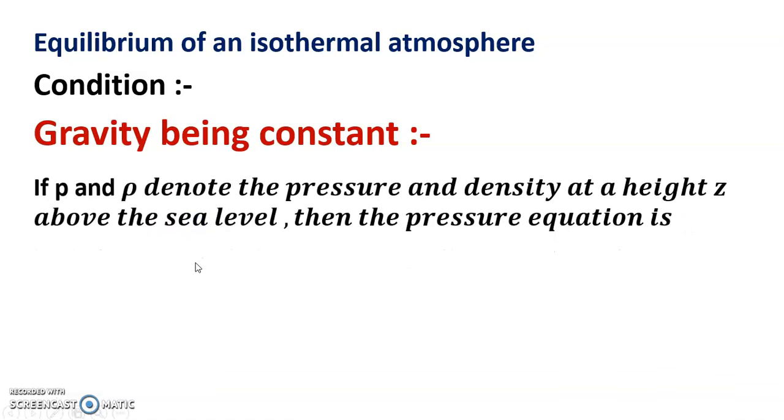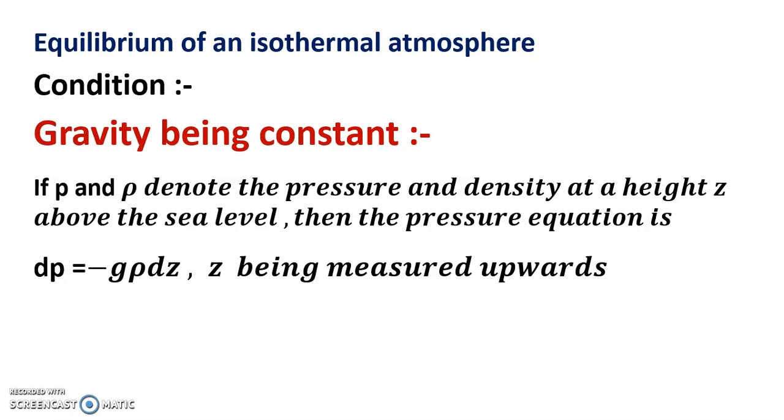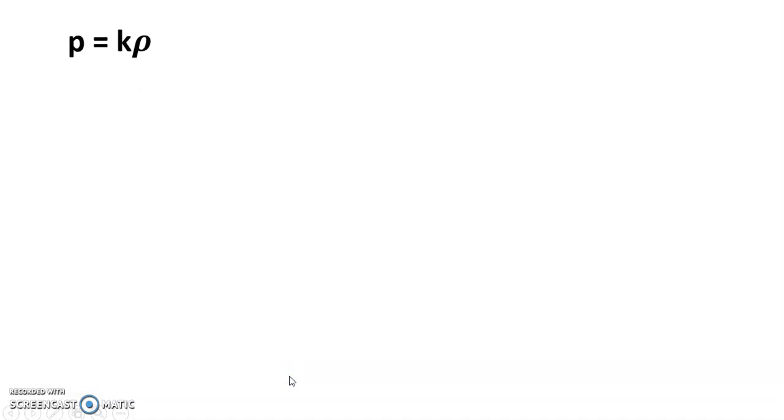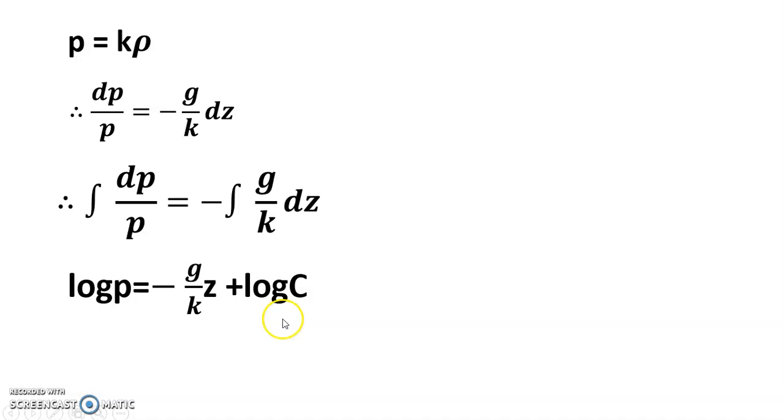If p and ρ denote the pressure and density at height z above sea level, then the pressure equation is dp = -gρdz. Here origin O is taken and axis Oz vertically upward, z being measured upward. Also by Boyle's law, p = kρ. Pressure is directly proportional to density, so dp/p = -g/k dz. Integrating both sides we get log(p) = -gz/k + log(C).